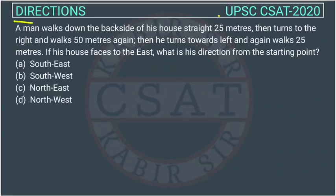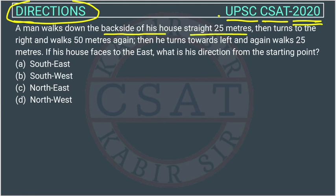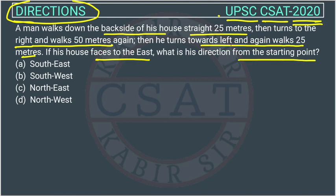This is a question on reasoning from the Direction chapter, asked by UPSC in the CSET paper of 2020. A man walks down the backside of his house straight 25 meters, then turns to the right and walks 50 meters again, and then he turns toward the left and walks 25 meters. If his house faces east, what is his direction from the starting point?